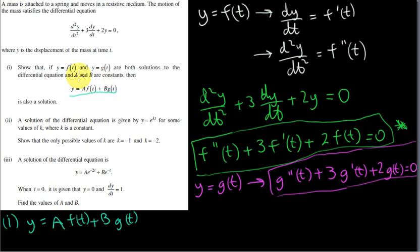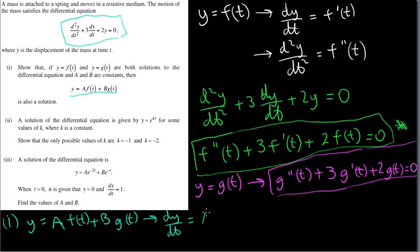That's actually true in general for any linear ordinary differential equation. So let's see if it satisfies this — we need to get first and second derivatives. dy/dt is the first derivative: when we differentiate, we leave a to one side as a number and differentiate f with respect to t, giving a·f′(t). Then for the b·g(t) term, b is just a number and the derivative of g(t) with respect to time is g′(t).